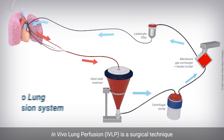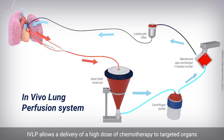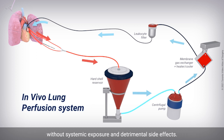In vivo lung perfusion is a surgical technique to isolate a lung from systemic circulation by bypassing the blood supply of the lung. IVLP allows the delivery of a high dose of chemotherapy to targeted organs, without systemic exposure and detrimental side effects.